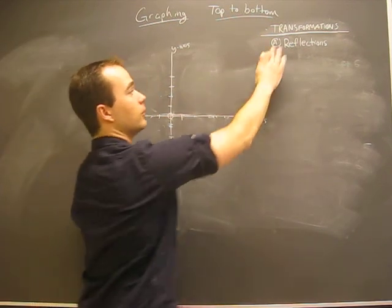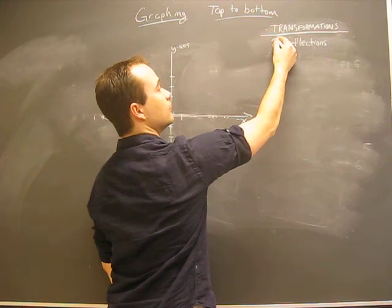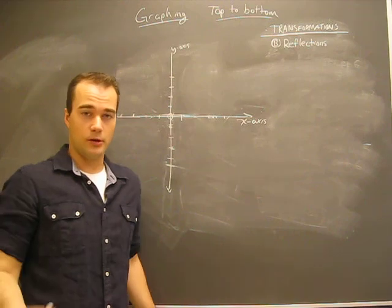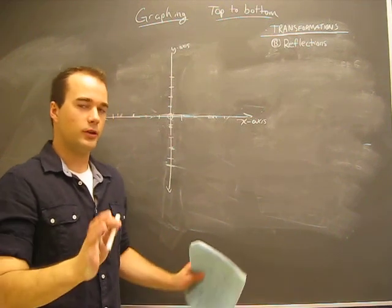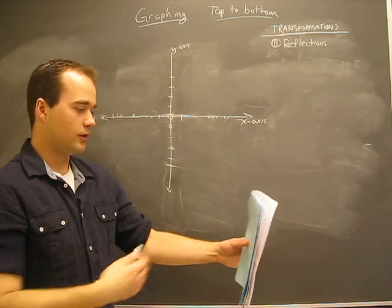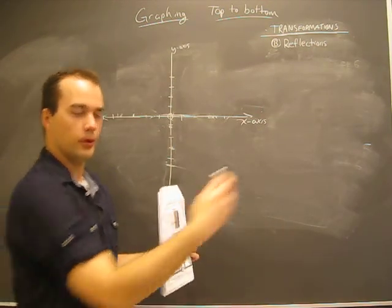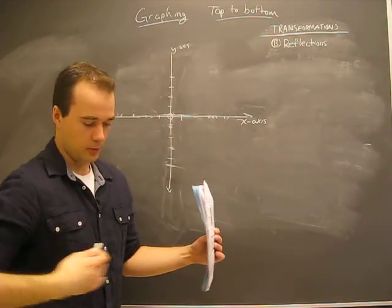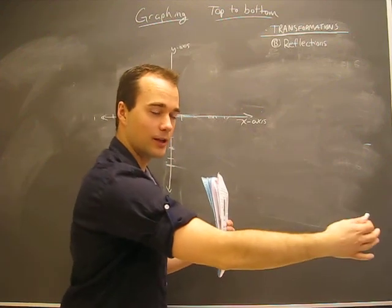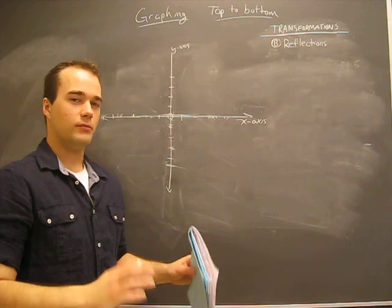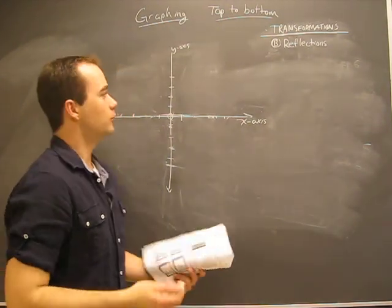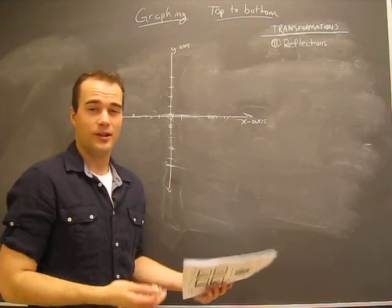We're going to talk about another type of transformation called reflections. This should make sense — just like when you look in the mirror, you see a reflection. If you're this far from the mirror, it appears as though your reflection is also this far away on the other side. That's exactly how reflections on the graph work, so if you've ever used a mirror before, you should be able to get it. It's pretty easy stuff.